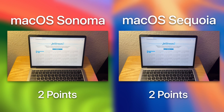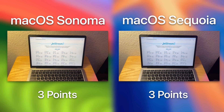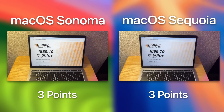Next up, we will be doing the JetStream benchmark, which tests more advanced JavaScript applications. For this one, I will be doing a 1-point margin of error, and once again, they both tied. The final browser test is the MotionMark test, which really pushes the browser to its limits by running random complex shapes and animations to measure the average framerate. It seems like Sonoma took the crown for this one.